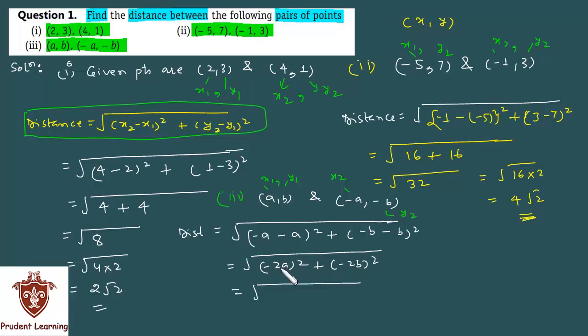Now, the square of minus becomes plus. The whole square of 2a gives you 4a square. Plus, again the square of minus becomes plus. The whole square of 2b gives you 4b square.